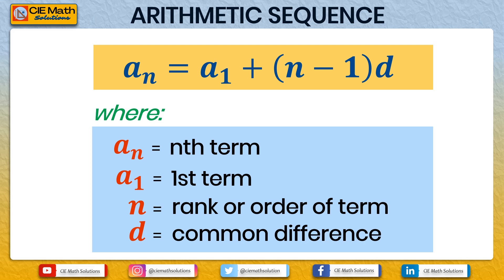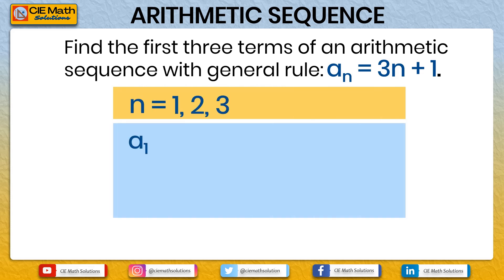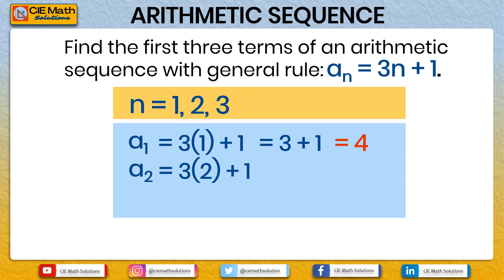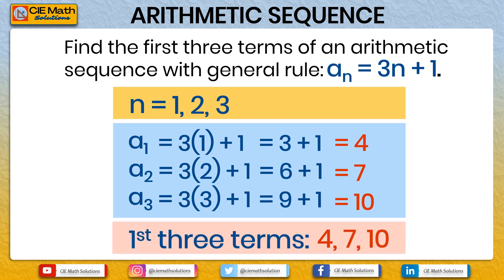Each arithmetic sequence has a specific rule. For example, an arithmetic sequence has rule AN equals 3N plus 1. To find the first three terms, substitute 1, 2, and 3 for the value of N. A1 equals 3 times 1 plus 1, which is 3 plus 1, equal to 4. A2 equals 3 times 2 plus 1, which is 6 plus 1, equal to 7. A3 equals 3 times 3 plus 1, which is 9 plus 1, equal to 10. Therefore, the first three terms are 4, 7, and 10.